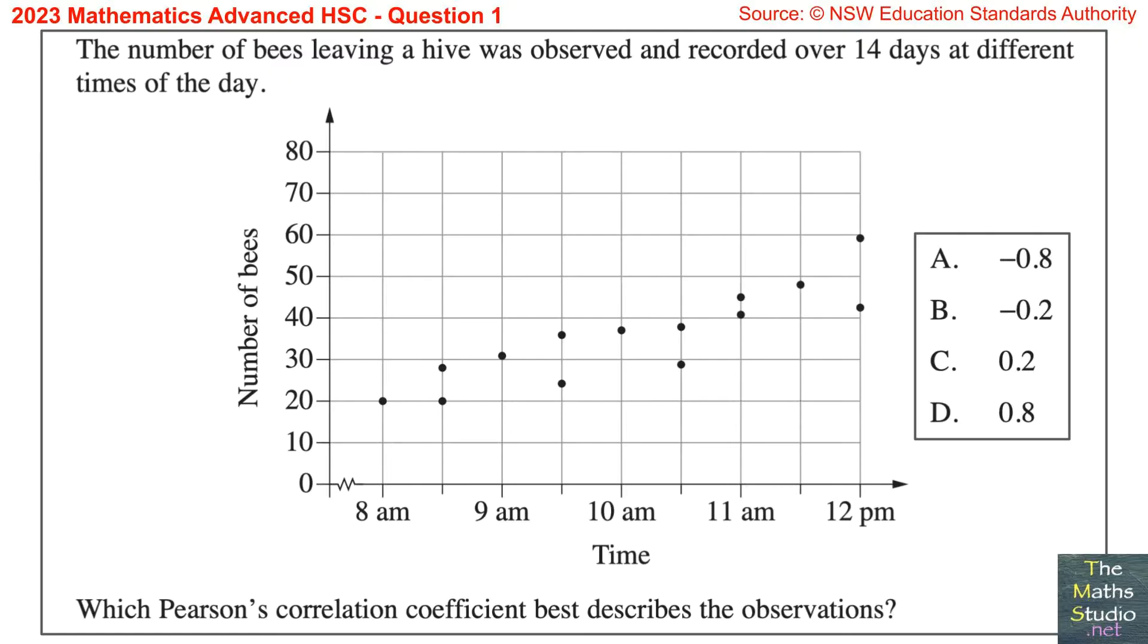Question 1. The number of bees leaving a hive was observed and recorded over 14 days at different times of the day. Which Pearson's correlation coefficient best describes the observations?